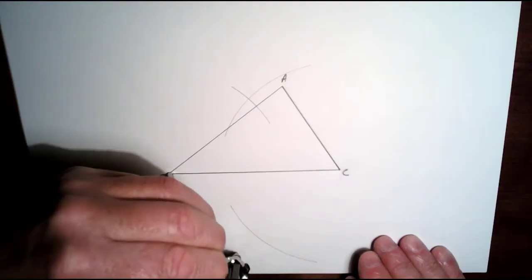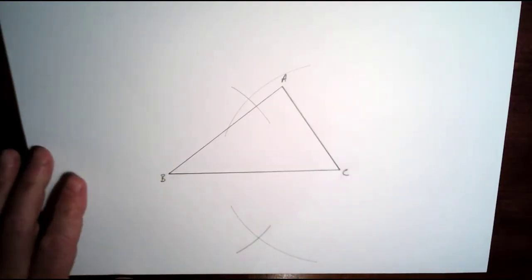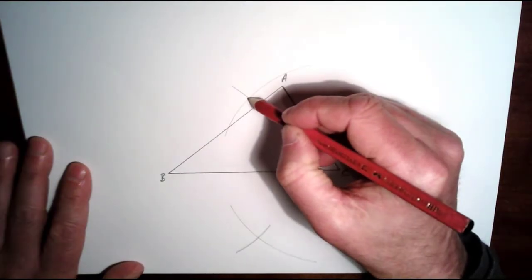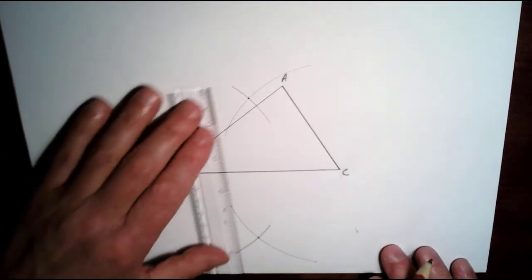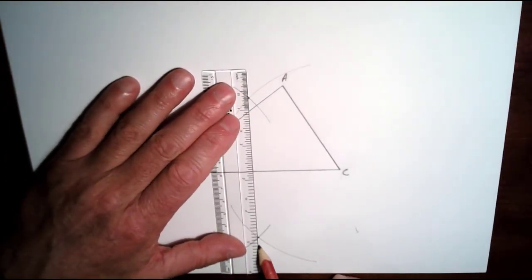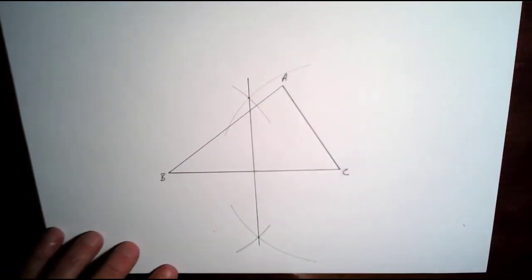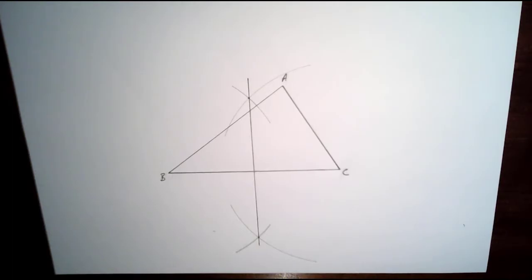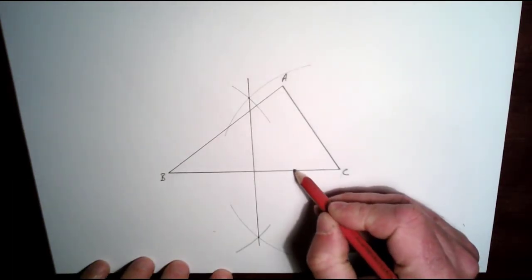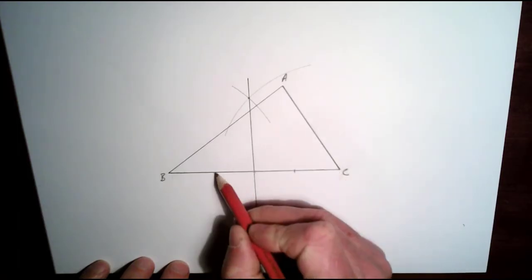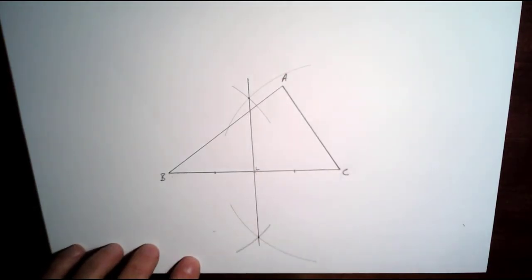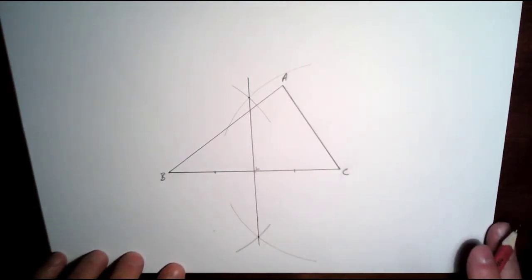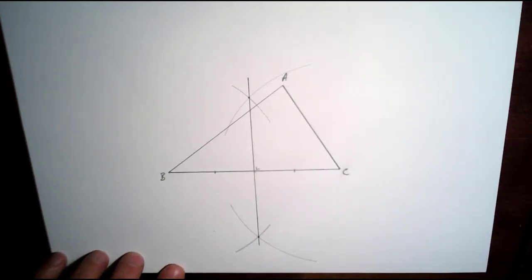From the other side, we draw an arc here and an arc here. Your arcs should intersect — this one intersects here and this one intersects here. We join those up, and what we've done is constructed a perpendicular bisector of BC. The distance from here to the midpoint should equal the distance from B to that midpoint, and this is perpendicular — a right angle. So we've found the midpoint of BC.